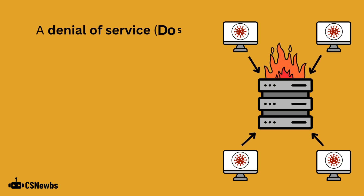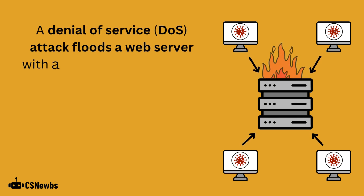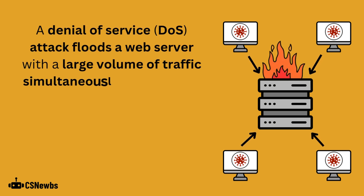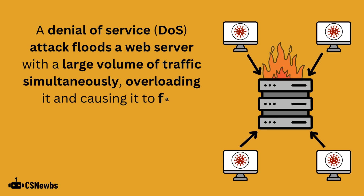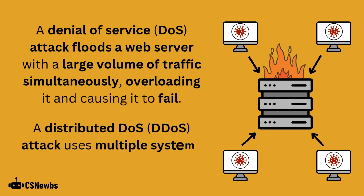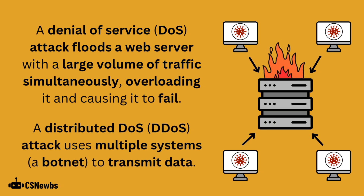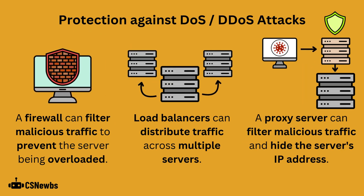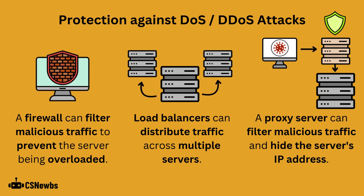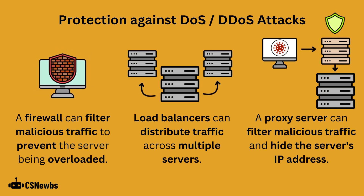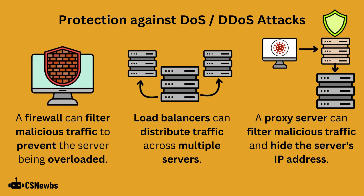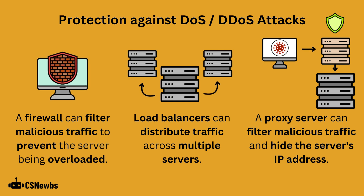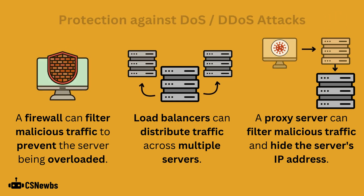A denial of service attack floods a web server with a large volume of traffic simultaneously, overloading it and causing it to fail. A distributed denial of service attack, or DDoS attack, uses multiple systems — often a botnet — to transmit data. To protect against a DoS or DDoS attack, a firewall can filter out malicious traffic to prevent the server from being overloaded. Also, load balancers can distribute traffic across multiple servers. Finally, a proxy server can filter malicious traffic and hide the server's IP address.